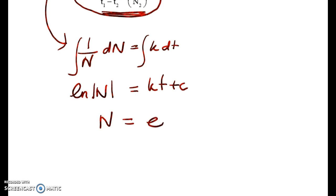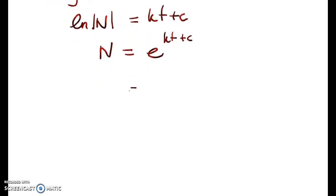All right, so n is equal to e to the kt plus c. We can write that as e to the kt, e to the c, which by convention I write as a, big A, e to the kt.